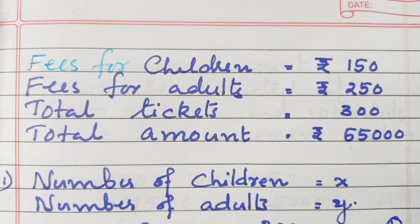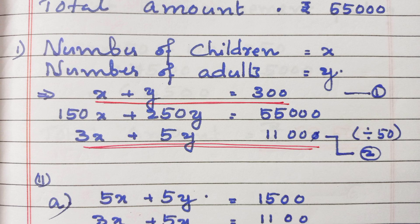In the question, the fee for children is Rs. 150, the fee for adults is Rs. 250, and the total tickets sold on that day is 300, and the total amount collected was Rs. 55,000. We are taking the number of children visited as X and the number of adults visited on that day as Y. The total tickets sold on that day is 300, therefore X plus Y is equal to 300.